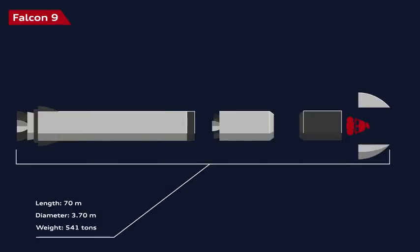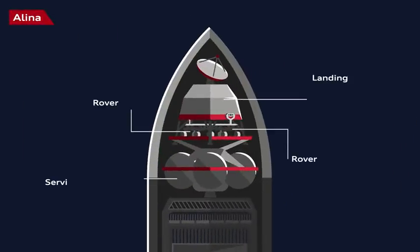In order to leave the Earth once and for all, the two Audi Luna Quattro moon rovers are loaded into a custom-built spacecraft, Alina, that will bring them safely to the moon.